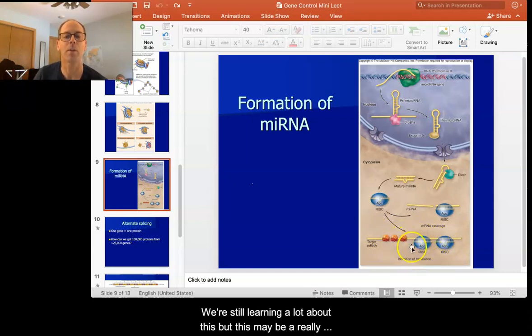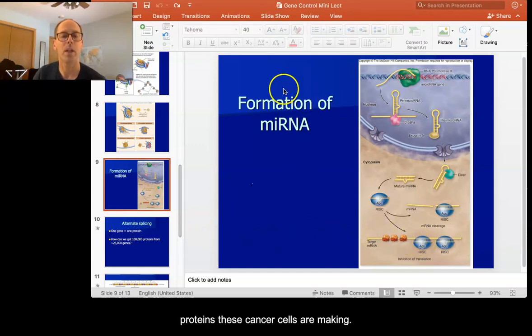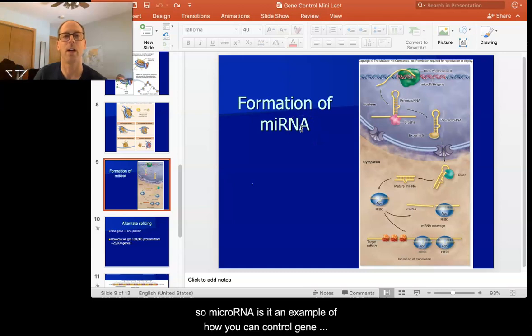We're still learning a lot about this, but this may be a really good way to control, for example, cells that are diseased, like cancer cells. If we can figure out a way to activate these micro RNAs in these cancer cells, we may be able to block some of the proteins that these cancer cells are making. So micro RNA is an example of how you can control gene expression after transcription.